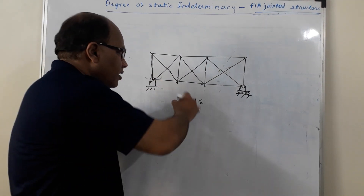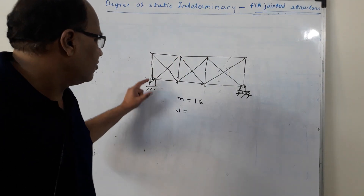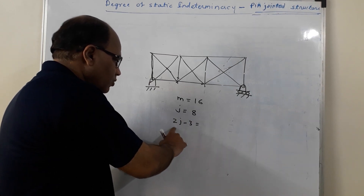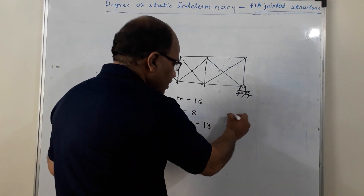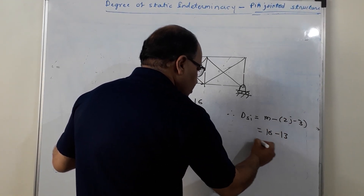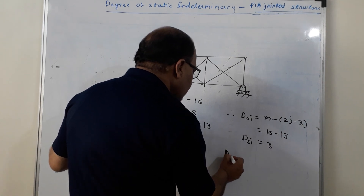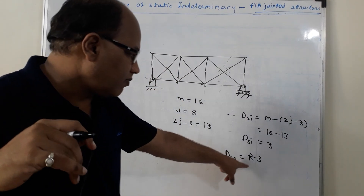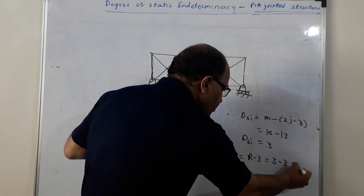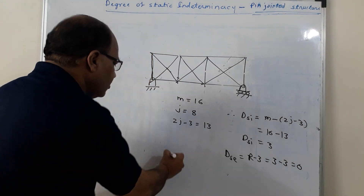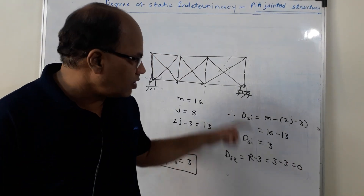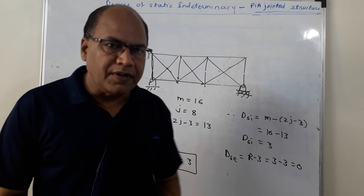Next, calculate j — the number of joints: 4 along the top line and 4 along the bottom line, giving j = 8. Therefore, 2j − 3 = 2(8) − 3 = 13. DSi = m − (2j − 3) = 16 − 13 = 3. For external indeterminacy, DSe = R − 3, where R = 3 (2 at the hinge support, 1 at the roller). So DSe = 0. The total degree of static indeterminacy = DSi + DSe = 3.